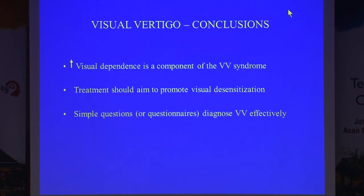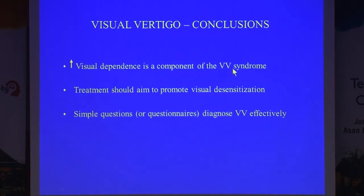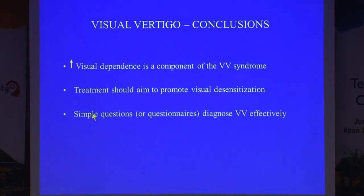So the conclusions of the visual vertigo story: increased visual dependency is a component of this visual vertigo syndrome. This is an abnormal visual-vestibular interaction which makes the patient highly sensitive to visual motion stimuli. Treatment should therefore be aimed at promoting visual desensitization. You don't need complex machines to do this — with simple questions or questionnaires you can diagnose this in your patients.